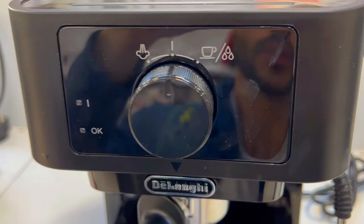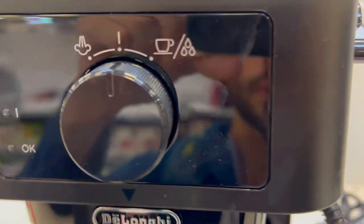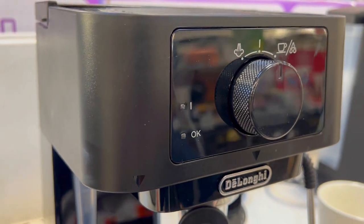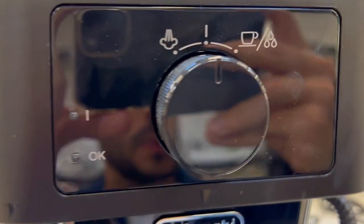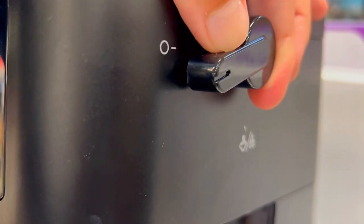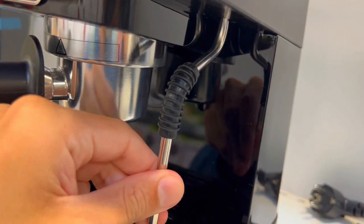First off, do you ever struggle with inconsistent pressure, resulting in lackluster brews? Stilosa's 15-bar pump provides optimal pressure, ensuring each espresso is a masterpiece. No more guessing or grappling with sub-bar shots. The stainless steel boiler delivers a consistently heated brew, elevating your home coffee game.